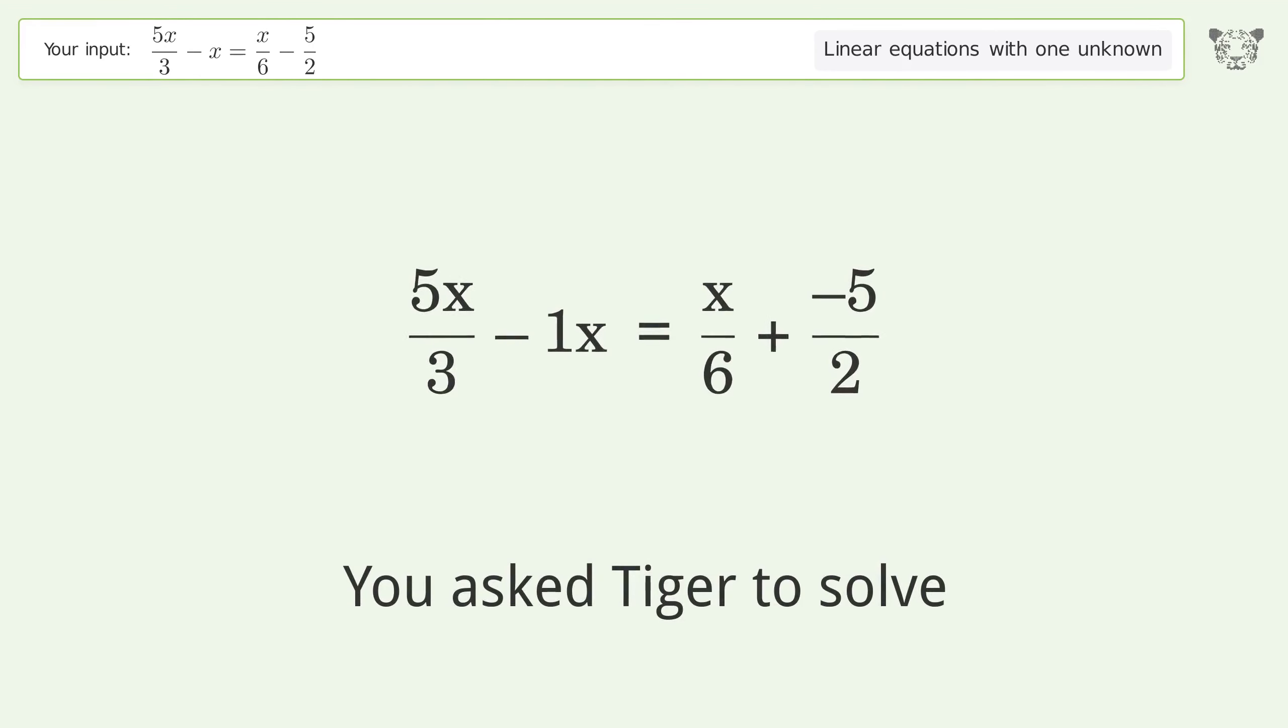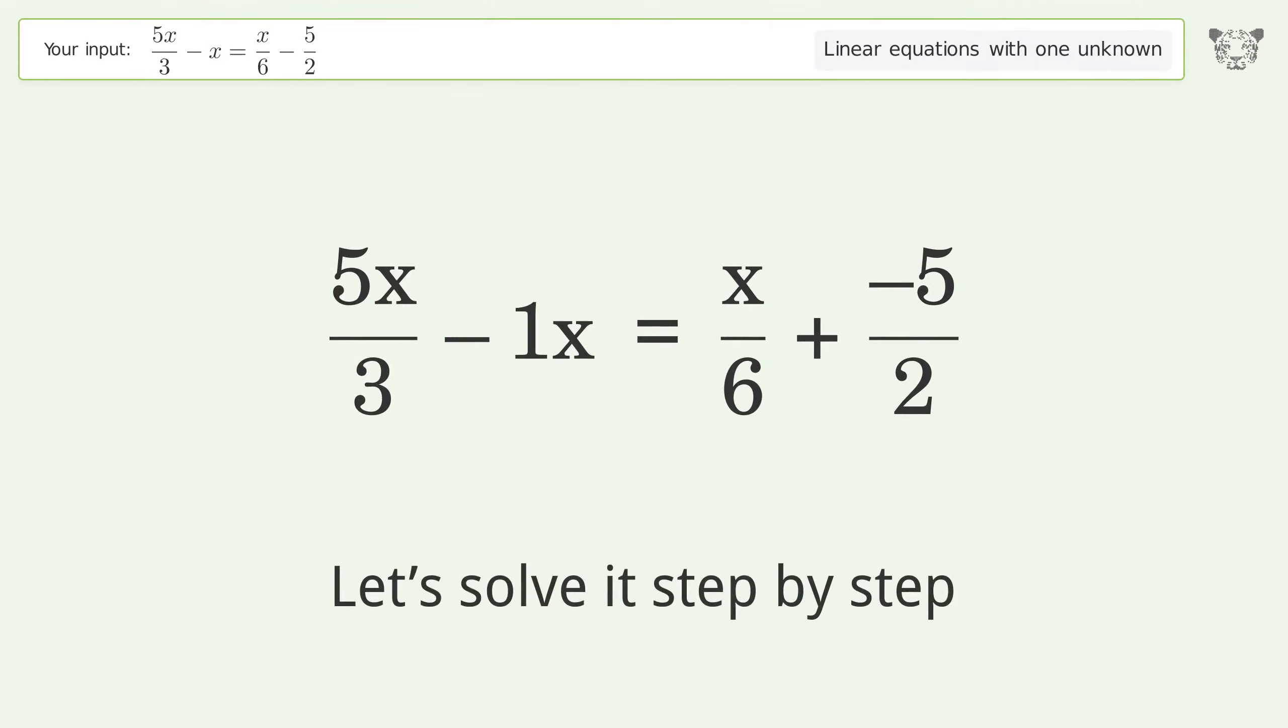You ask Tiger to solve this. It deals with linear equations with one unknown. The final result is x equals negative 5. Let's solve it step by step. Simplify the expression, group the coefficients.